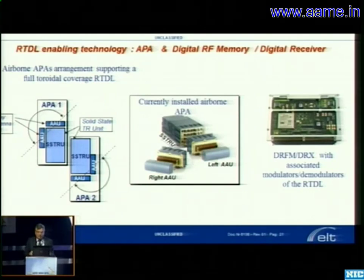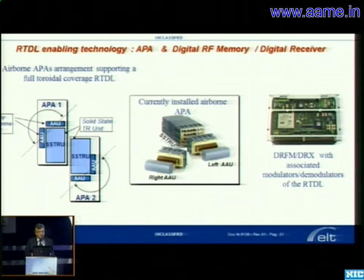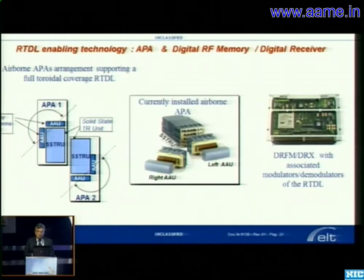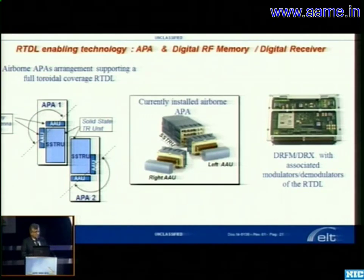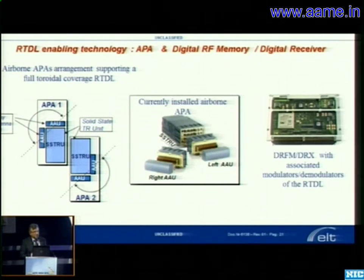All of this is now confined as additional functionality into the digital radio frequency memory and digital receiver already on board the airborne electronic warfare system. Within this digital radio frequency memory and digital receiver, we have associated all the modulators and demodulators of the real-time data link. With this, I have given you an idea of what is possible through the introduction of this technology into the systems we are producing, and how it can be added as a possible additional functionality onto the system. I am ready for any questions.